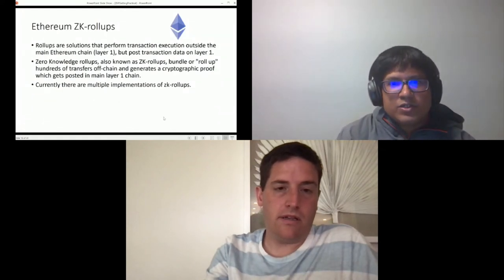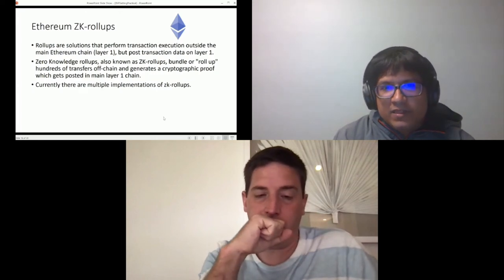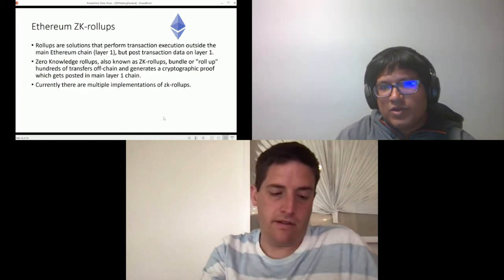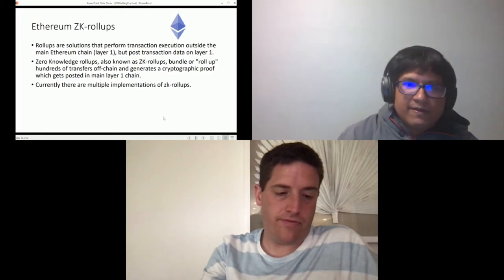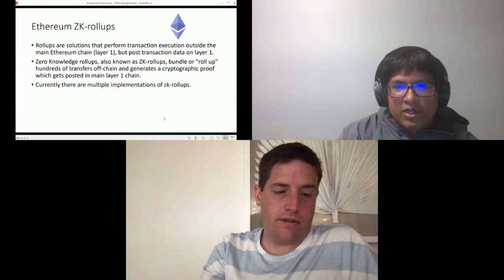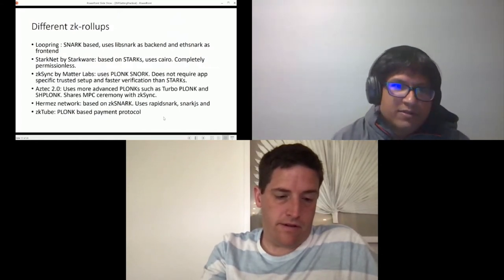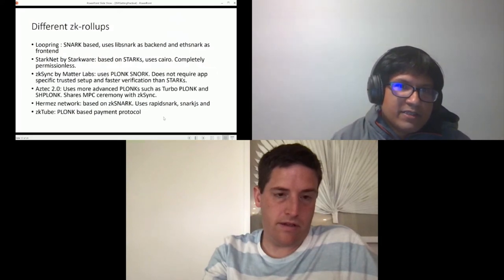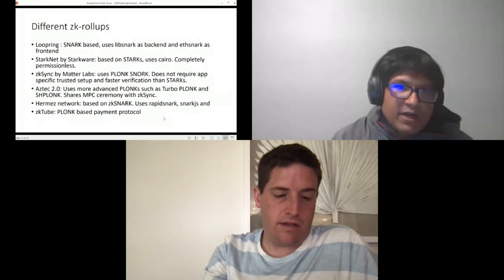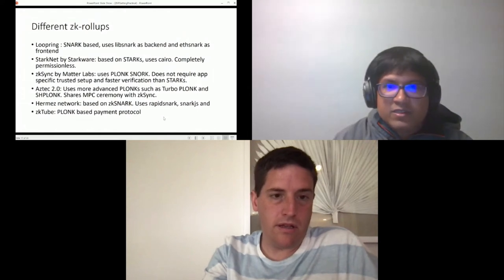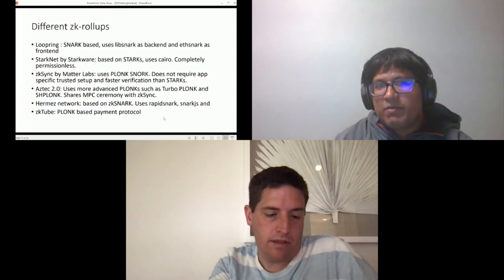These zk-rollups are solutions that perform transaction execution outside the main Ethereum chain but then they post the transaction data on layer one—the actual chain. Essentially they post the zero-knowledge proof that everything is fine. Currently there are multiple implementations of zk-rollups and they are using different advanced cryptographic frameworks. One of them is Loopring which is STARK-based. It uses libsnark as backend and Zocrates as frontend. Then we have StarkNet by Starkware which is based on STARKs. It uses Cairo and as a result this is completely permissionless.